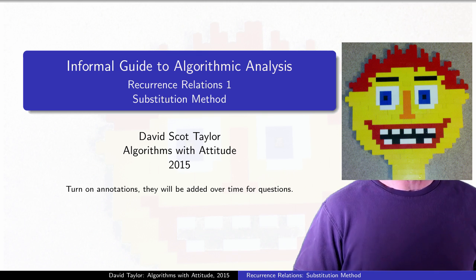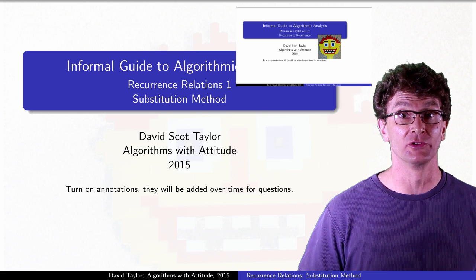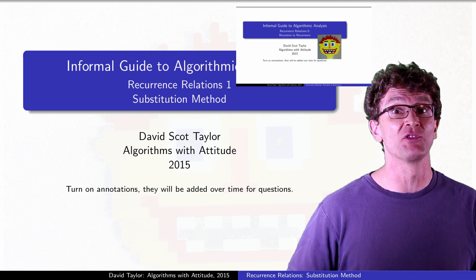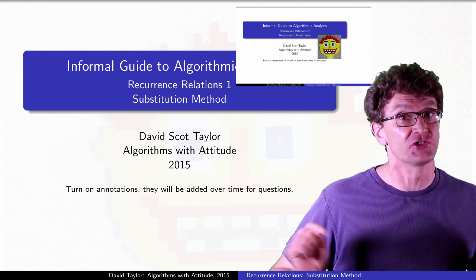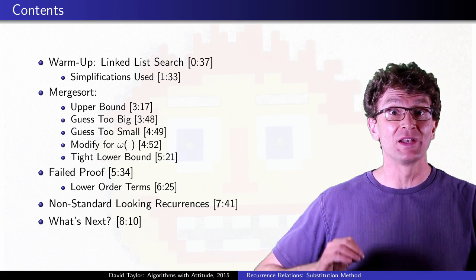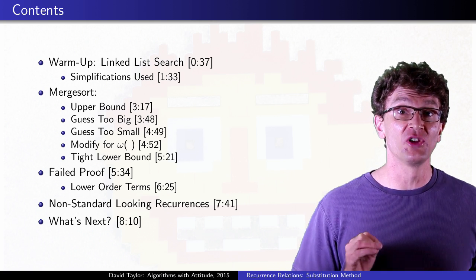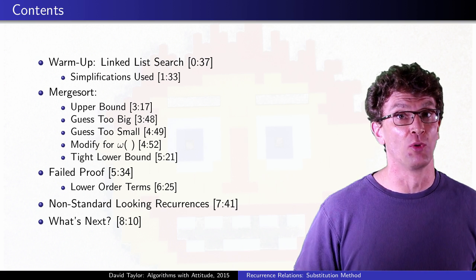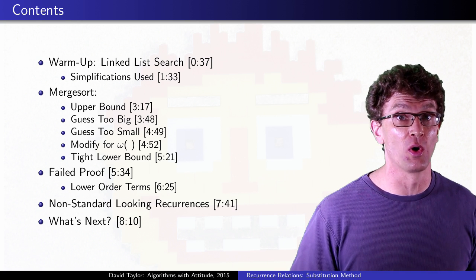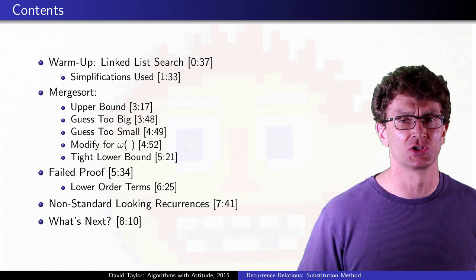This video goes over using the substitution method for solving recurrence relations. A previous video goes over where recurrences come from, including the first two examples in this video, and also justifies some of the rounding we use here, but if you already get that stuff, start here. We start with a really simple example, and for it we will mention a few issues that we normally sweep under the carpet to keep things simple. Using those simplifications, we will analyze the merge sort recurrence more deeply. Next comes an example that needs a slightly more complex approach using lower order terms, then we take a quick look at a common pitfall for a stranger looking recurrence.